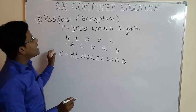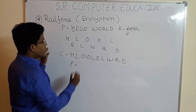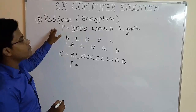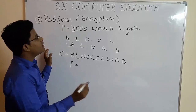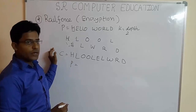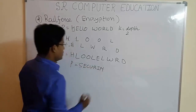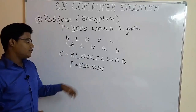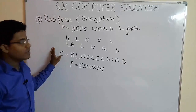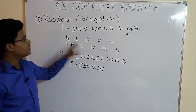Now as an exercise I am giving you one plaintext. You have to tell me the ciphertext using the same railfence method and comment below in this video. The plaintext is security. Comment below and let me know what is the answer for the plaintext security using this method.